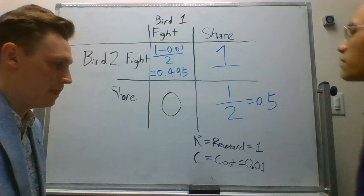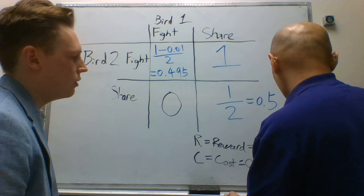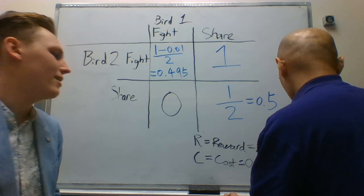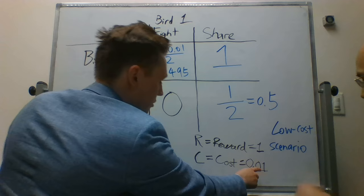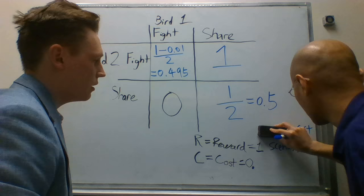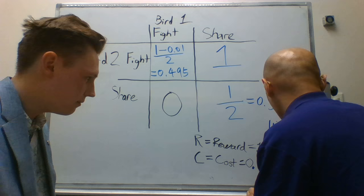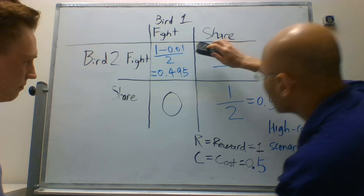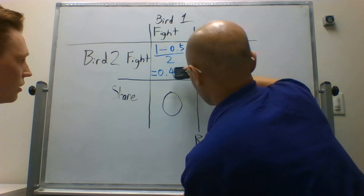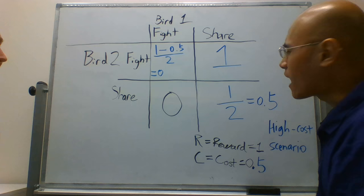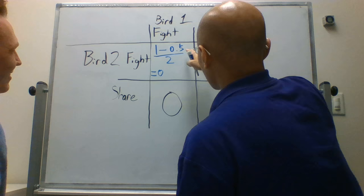However, if we look at this from a different angle where our cost is much larger — let's say a cost of 0.5 — this is the high cost scenario. Plugging in: 1 minus 0.5, divided by 2, equals 0.25. Everything else remains the same: the reward is still 1, and the share-and-share payoff is still 1 over 2, which is 0.5. So once the cost starts to increase, you get less and less benefit as a fighter.